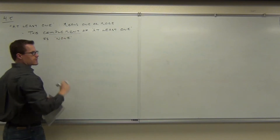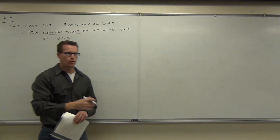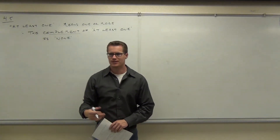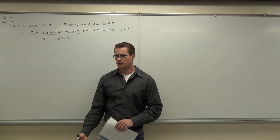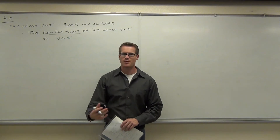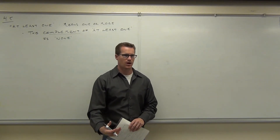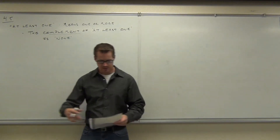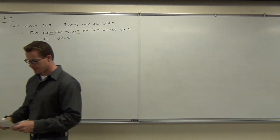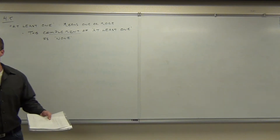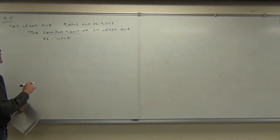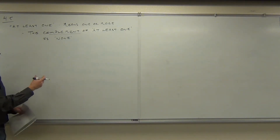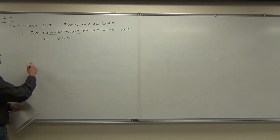If you don't have at least one of something, you have none. If you don't have at least one dollar, or at least some amount of money in your pocket, then you have no money in your pocket. That's the complement there. What's nice about this is it leads us to this definition mathematically for 'at least one.'